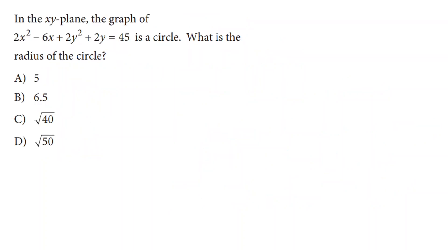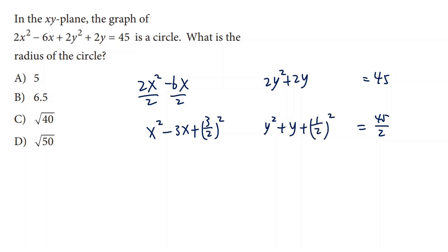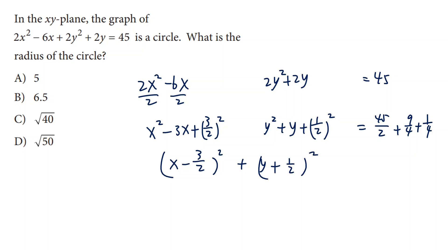Let's see another one — same idea, completing the square. In the xy plane, the graph is a circle with a radius. First, we can divide both sides of the equation by 2, which changes it into x squared minus 3x plus y squared plus y equals 45 over 2. Now we add 3 over 2 squared, which is 9 over 4, and 1 over 2 squared, which is 1 over 4. This gives us x minus 3 over 2 squared plus y plus 1 half squared equals — on the right side, that is 10 over 4.